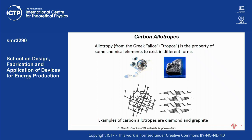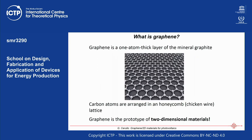Graphite is essentially what you have in your pencil. Now, what if you thin graphite more and more until you reach a single atomic layer? Then you have graphene. Graphene is simply a one-atom-thick layer of the mineral graphite, where the carbon atoms are arranged in a honeycomb — a chicken-wire lattice. This is the prototype of so-called two-dimensional materials.